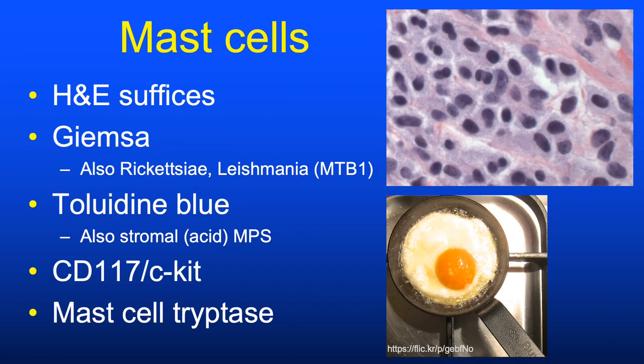Mast cells are usually readily identified on H&E. In the dermis they tend to have a round or oval shape with a centrally situated small round nucleus and pale granular cytoplasm—comparison with a fried egg is common. When needed, we can do Giemsa or toluidine blue histochemical stains or immunostains for CD117 or mast cell tryptase.